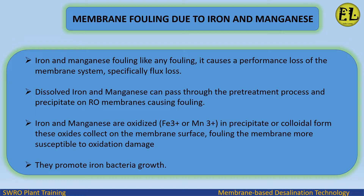Iron and manganese are oxidized to Fe3+ or Mn3+. In precipitate or colloidal form, these oxides collect on the membrane surface, fouling the membrane and making it more susceptible to oxidation damage, and promoting iron bacteria growth.